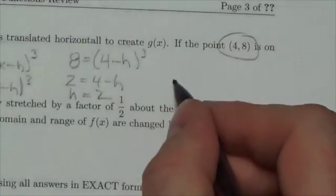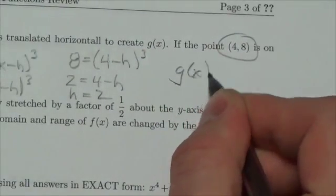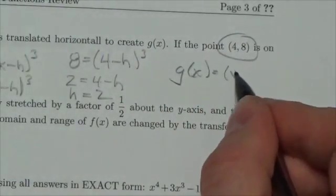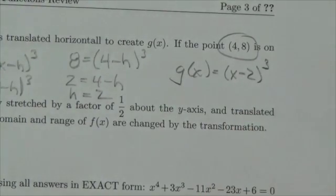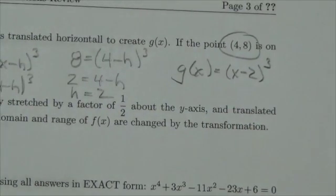And with that, we can write, finally, that g(x) is simply equal to x minus 2 cubed. And that's what they're looking for in this question.